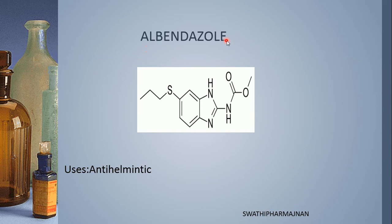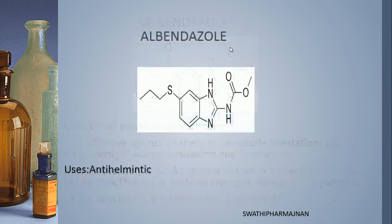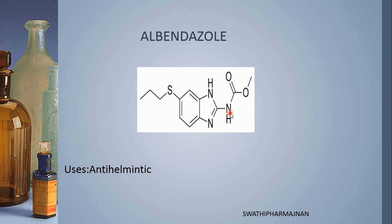The next structure is albendazole. The suffix 'azole' indicates it contains imidazole. Imidazole is fused with benzene — so this is benzimidazole. Albendazole, mebendazole, and thiabendazole are all heterocyclic compounds with benzimidazole as the basic nucleus. To the benzimidazole, a thiopropane group (CH₂CH₂CH₃) is present, along with an NH-COO-CH₃ group — that is the albendazole structure.